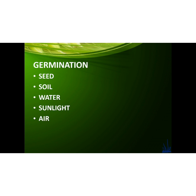The chapter name is Seed. This is for class 5 EVS subject. Let us start our new chapter — Germination. Germination is the process in which a seed turns into a plant and with time turns into a tree.